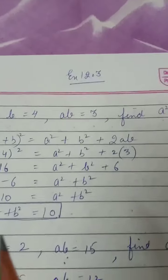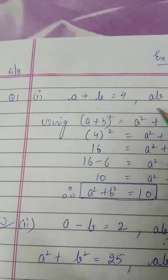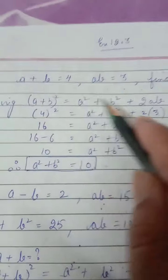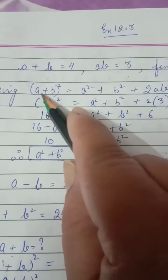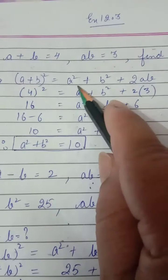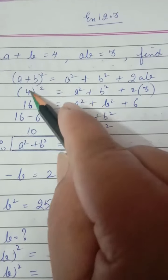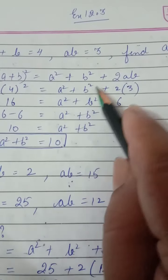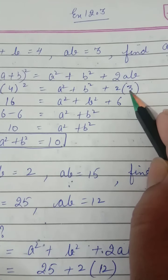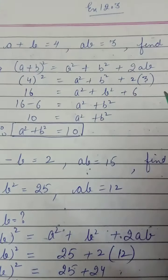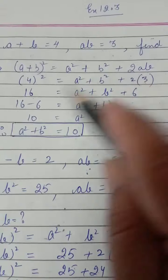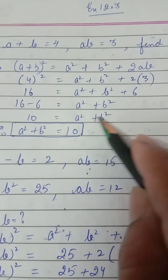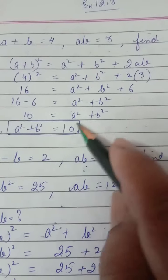Now we have the third exercise, where (a + b) and ab are given and we have to find a² + b². Use the identity (a + b)² = a² + b² + 2ab. First mention the identity, then pick up the values: (a + b) = 4, so 4² = 16. a² + b² remains as it is; 2ab = 2 × (value of ab) = 2 × 3 = 6. Shifting 6 to the other side gives a² + b² = 10.